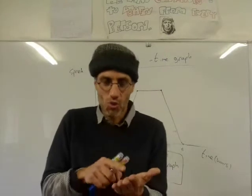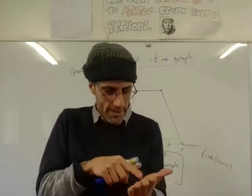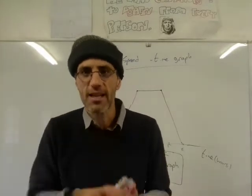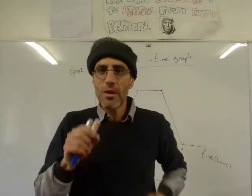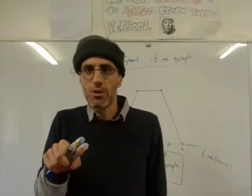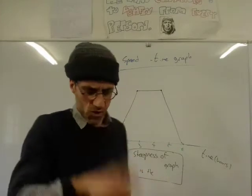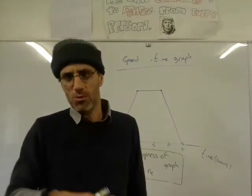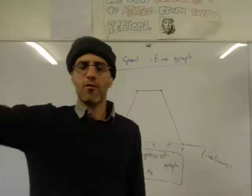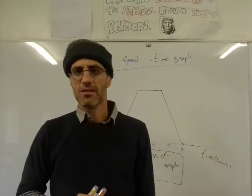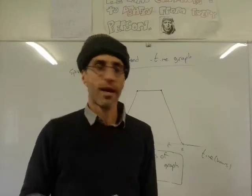Imagine we look at the dial that shows our speed and write it down every minute. The first minute, at the beginning, the speed was zero. After one minute, the speed was 20 kilometers. After two minutes, it was 30. We write it down over, say, 10 minutes, and then we draw a graph. And this is what we got.